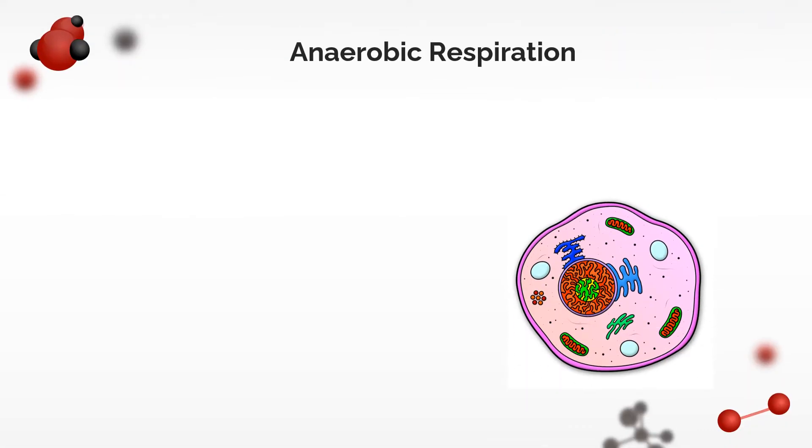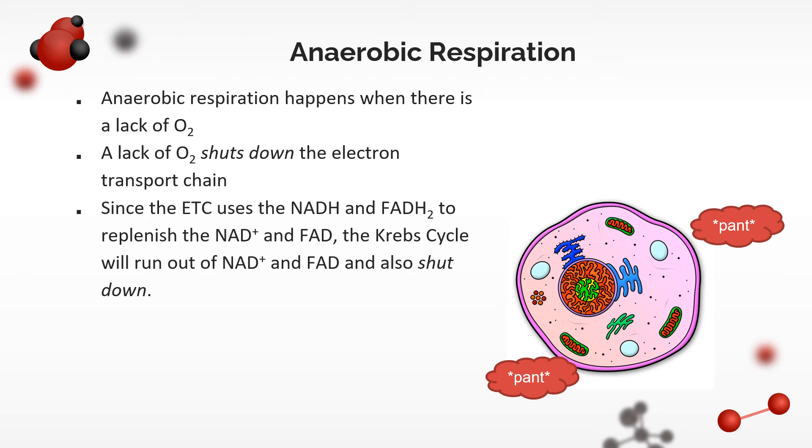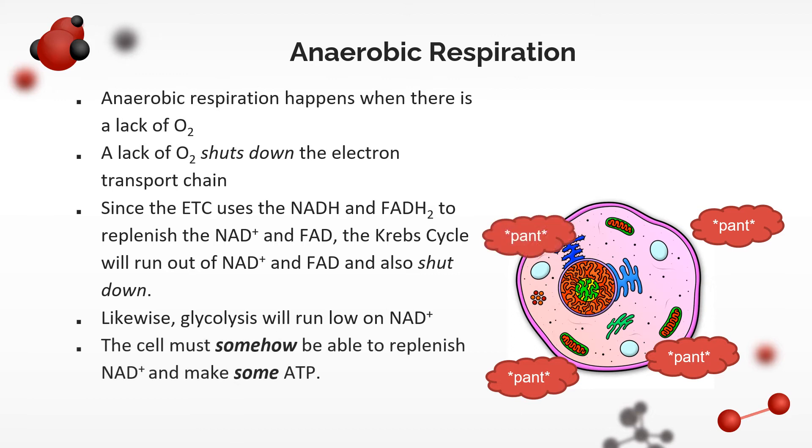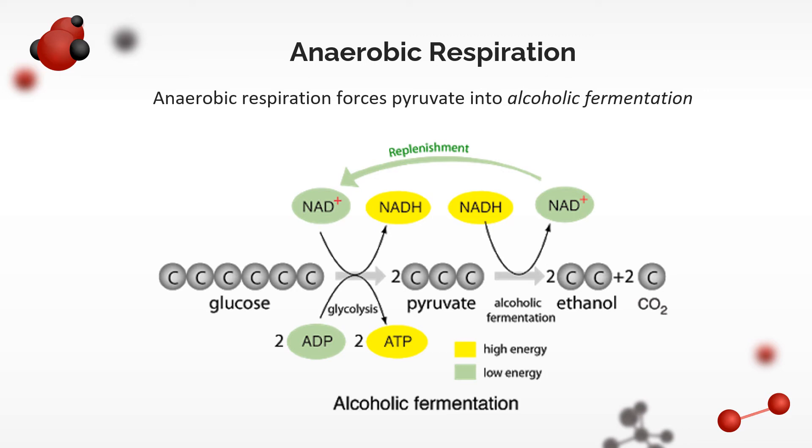Let's go over anaerobic respiration. Anaerobic respiration happens when there's a lack of oxygen gas. A lack of oxygen gas shuts down the electron transport chain. Since the ETC uses NADH and FADH2 to replenish NAD plus and FAD, the Krebs cycle will run out of NAD plus and FAD and also shut down. Likewise, glycolysis will run low on NAD plus, not to mention on ATP because its earlier steps require ATP. The cell must somehow be able to replenish NAD plus and make some ATP. This is where anaerobic respiration comes in. Anaerobic respiration shunts pyruvate into alcoholic fermentation. So in glycolysis, glucose is converted into pyruvate. This uses NAD plus and produces ATP. Then pyruvate is converted into ethanol with the loss of CO2 and the use of NADH. This replenishes NAD plus.